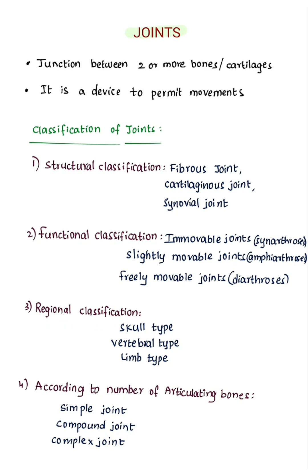Regional classification categorizes joints depending on their location: skull type, vertebral type, and limb type.